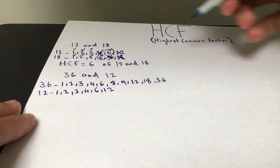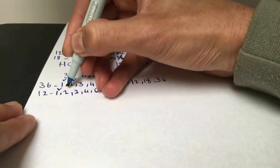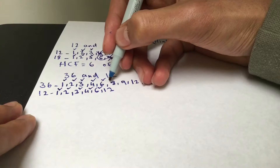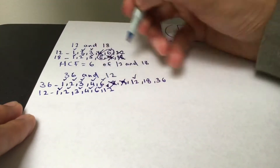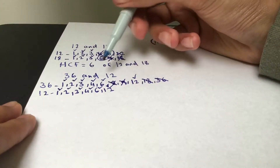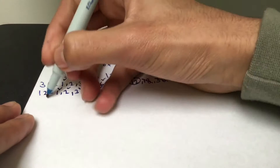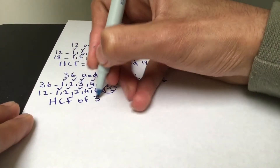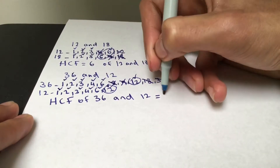Now we tick what's in common. 1, 2, 3, 4, and 6 are present in both. 8 is not present, 9 is not present, 12 is present, and 18 and 36 are not present in 12. So the highest common factor is 12. The HCF of 36 and 12 equals 12.